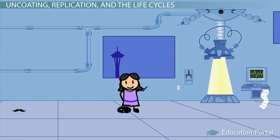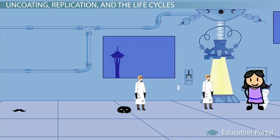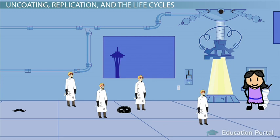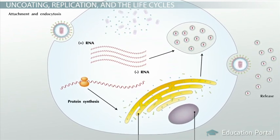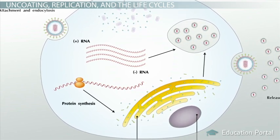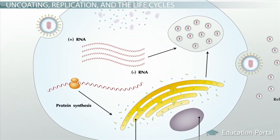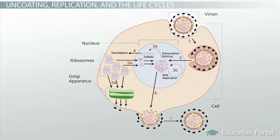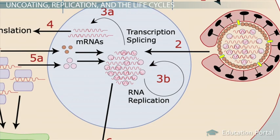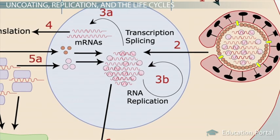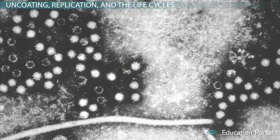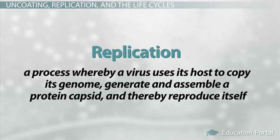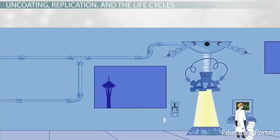Now that we're unmasked and the viral nucleic acid is released into the host, we can begin to replicate the little madman's clones to see how he's been creating all of these havoc-wreakers. It turns out that the viral nucleic acid, be it DNA or RNA, will basically take over the host once inside. There are many processes by which this occurs, and this will be covered in later lessons. In general, the viral genome will take over the host cell in order to copy its own nucleic acid many times over and use the organelles and metabolic processes of the cell to create and assemble the proteins for its capsid. This entire process is called replication — a process whereby a virus uses its host to copy its genome, generate and assemble a protein capsid, and thereby reproduce itself.